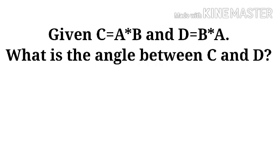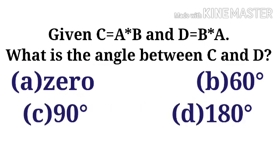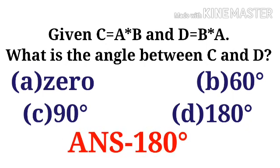Given C equals A cross B and D equals B cross A, what is the angle between C and D? The options are: Option A, 0; Option B, 60 degrees; Option C, 90 degrees; Option D, 180 degrees. The correct option is Option D, 180 degrees.